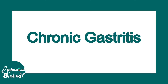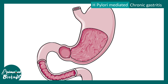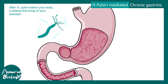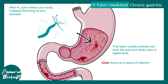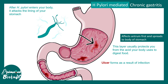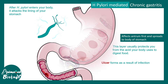One of the key causes of chronic gastritis is H. pylori infection. After H. pylori enters the body, it attacks the stomach lining, which normally protects internal structures from harsh HCl. This leads to ulcerations throughout the stomach, beginning in the antrum and eventually spreading throughout the body of the stomach.